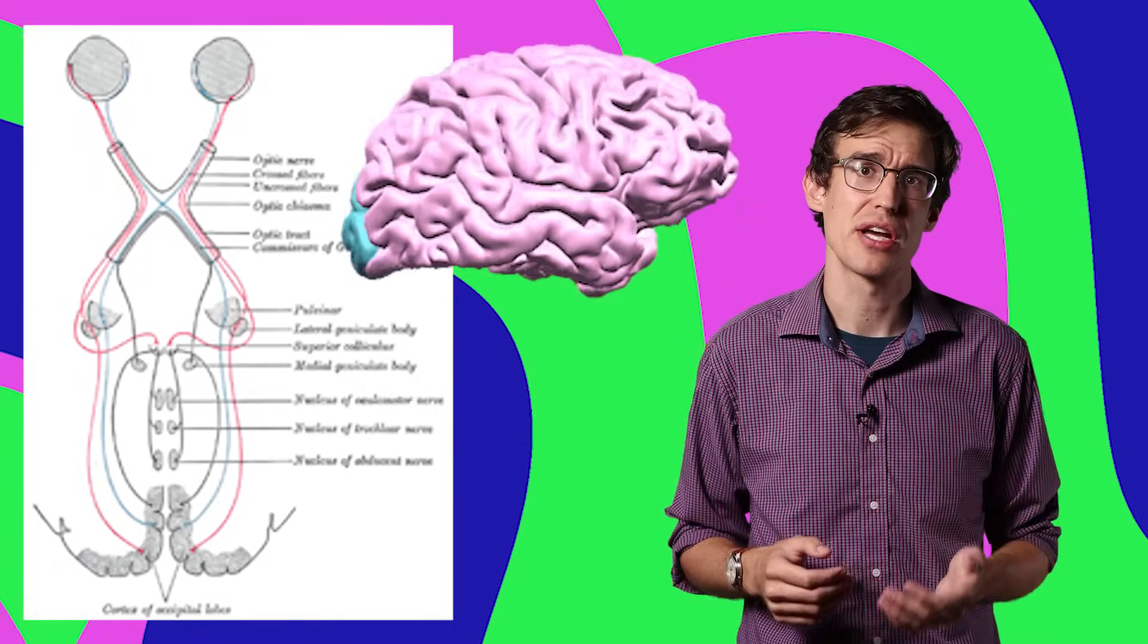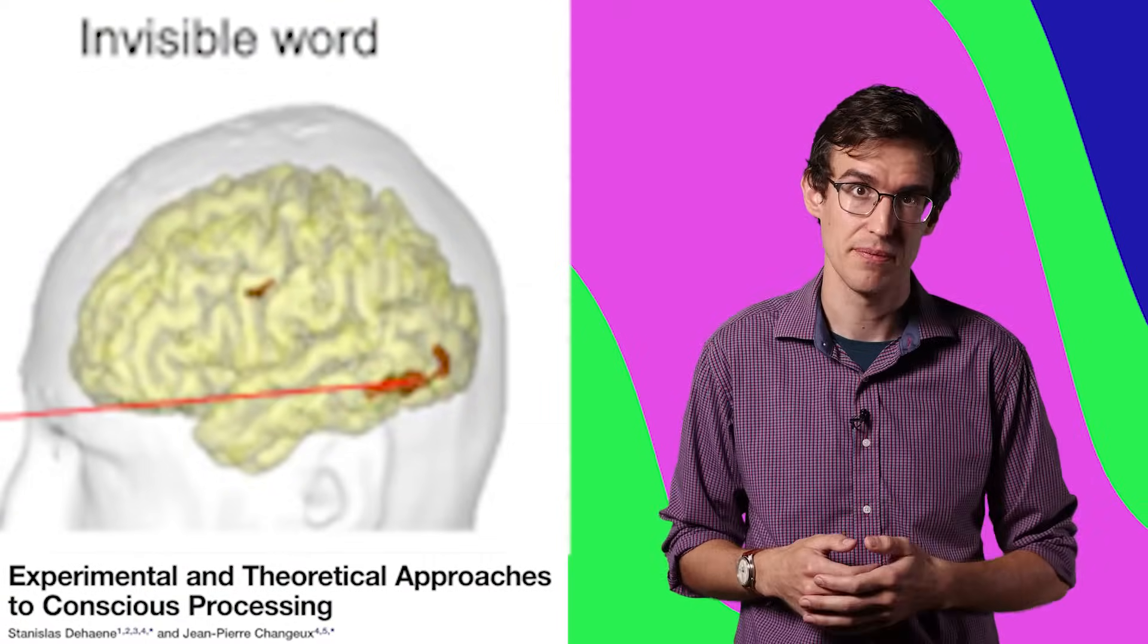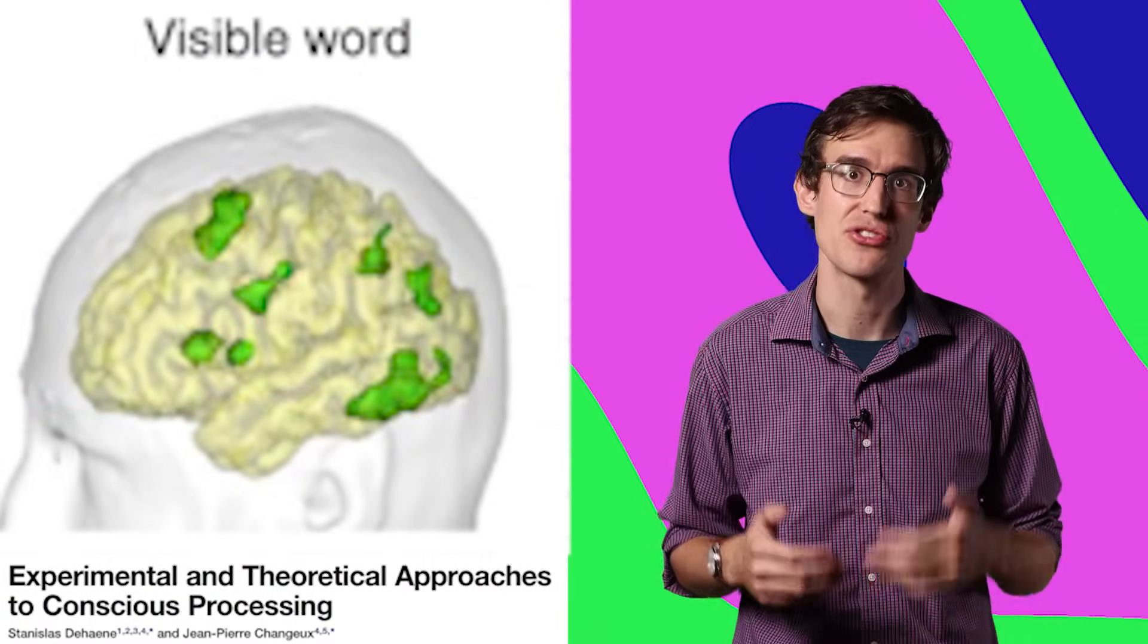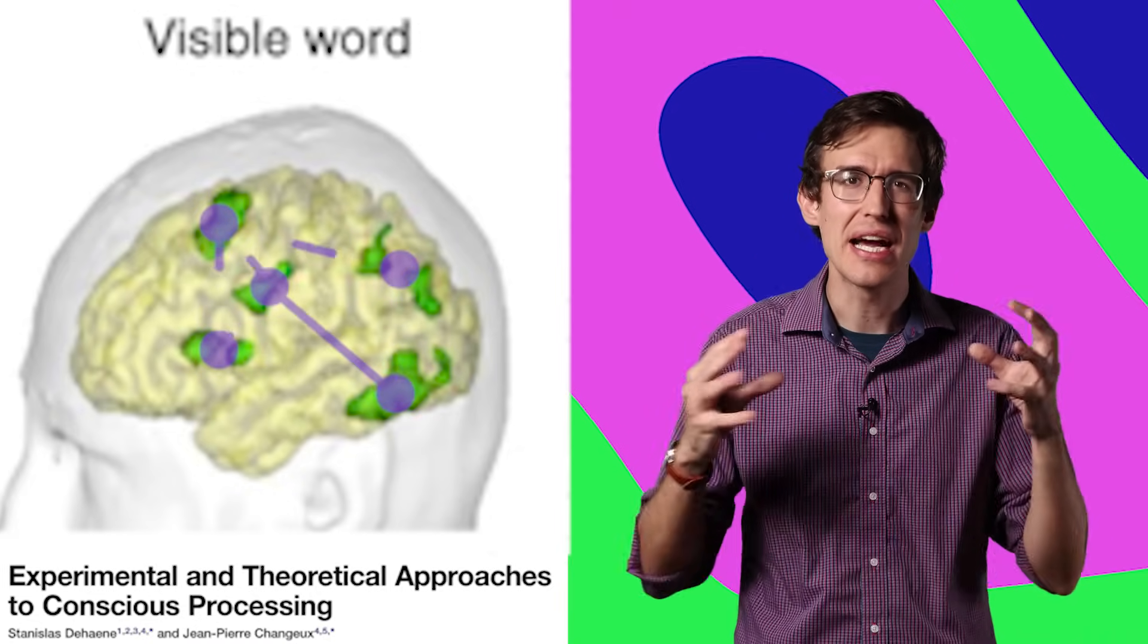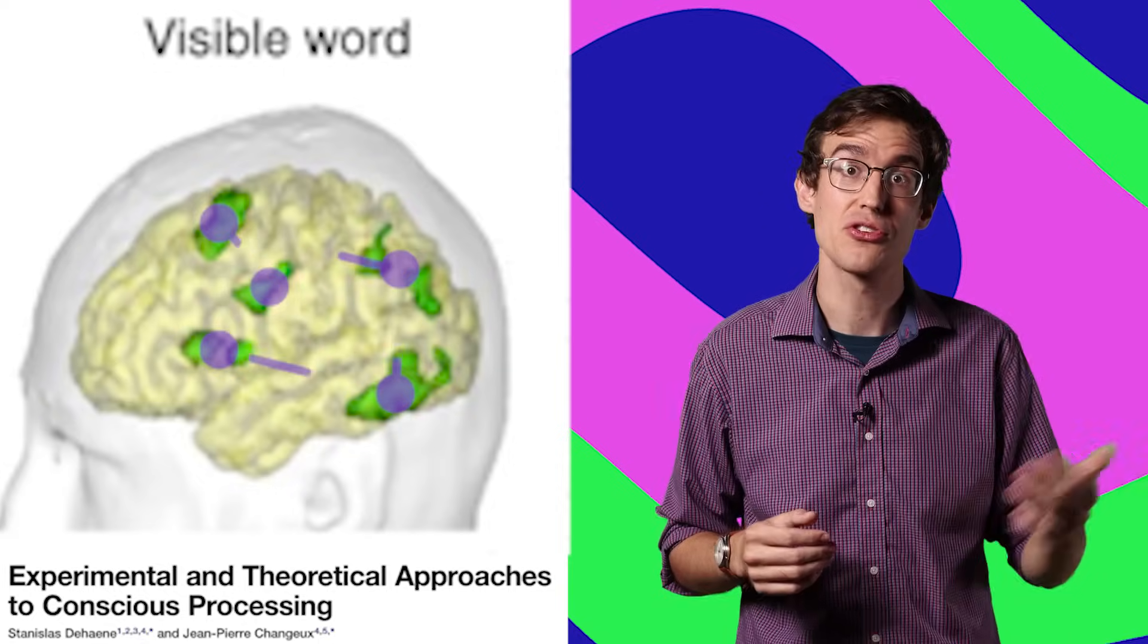They're not just looking at areas like visual cortex that are specialized for processing sensory information. Your sensory cortex can process something without you being conscious of it, like when you get a subliminal message. To try to measure consciousness, they're looking at how different brain areas talk to each other.